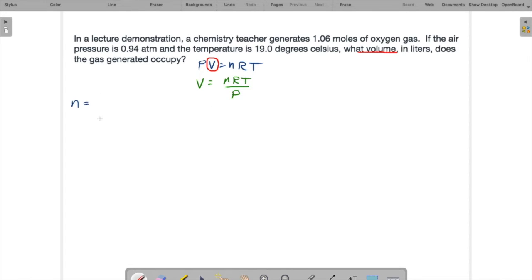So N is given. That's 1.06 moles. R, 0.08206 liter atmosphere, mole, Kelvin. T is given in Celsius, 19.0 Celsius. Since we're using this in the gas equation, which always takes absolute temperatures, we need to convert this to Kelvin immediately by adding 273.15 to it. 292.15 Kelvin. And then P, the pressure, is 0.94 atmospheres.